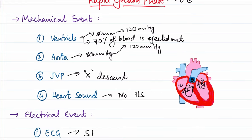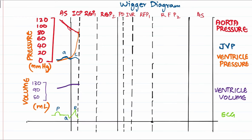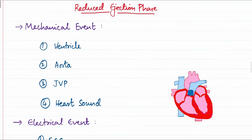On the ECG, the rapid ejection phase corresponds to the ST segment. On the Wiggers diagram: ventricular volume shows a dip as 70 percent of blood is ejected; JVP shows the 'x' descent; ventricular pressure rises to 120 mmHg; and aortic pressure also rises to 120 mmHg.